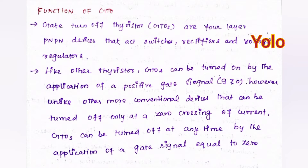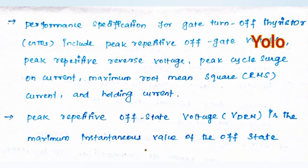Like other thyristors, GTOs can be turned on by the application of a positive gate signal. However, unlike more conventional devices that can be turned off only at a zero crossing of the current, a GTO can be turned off at any time by the application of a gate signal equal to zero.